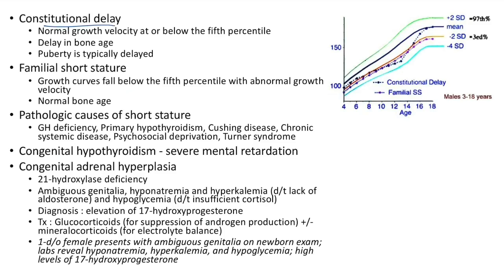Constitutional delay: normal growth velocity at or below 5th percentile; delayed bone age; puberty typically delayed. Familial short stature: growth curve below 5th percentile with abnormal growth velocity; normal bone age. Constitutional delay eventually reaches the mean, whereas familial short stature does not.